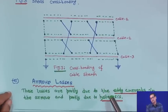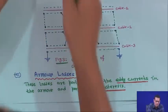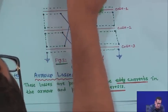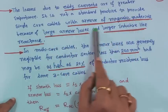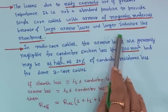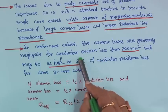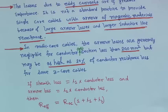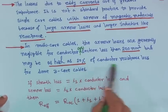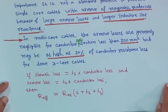Next, armour is there in the cable, so we have to consider armour losses also. Armour losses are partly due to eddy currents in the armour and partly due to hysteresis — both eddy current and hysteresis must be considered. The losses due to eddy currents are of greater importance. It is not standard practice to provide single core cables with armour of magnetic materials because of large armour losses and larger inductive line reactance. In multi-core cables, armour losses are generally negligible for conductor cross-section less than 200 mm², but may be as high as 20 percent of conductor resistance loss for the same 3-core cables.